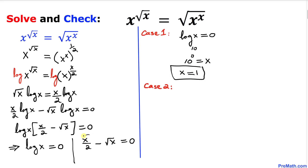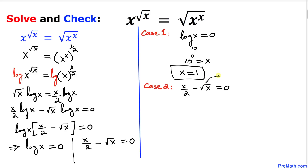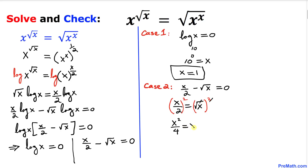Now let's consider the second case: x divided by 2 minus square root of x equal to 0. Moving the square root of x to the right hand side gives us x over 2 equal to square root of x. Let's square both sides: the left hand side gives x squared divided by 4, and on the right the square and square root undo each other, giving x.